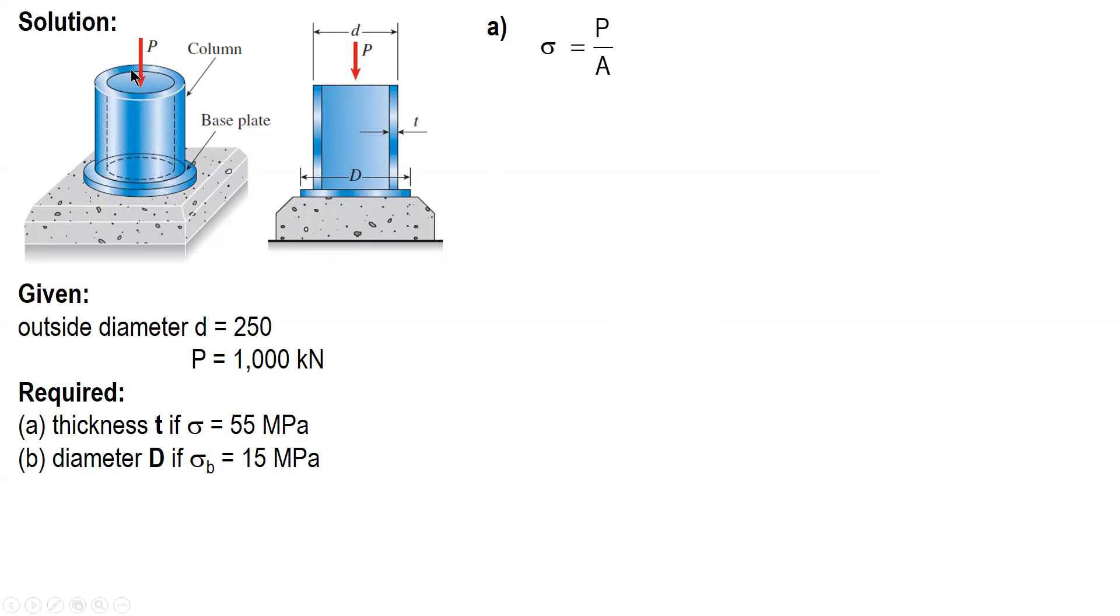Now the resisting area is this one. And you learn from section, bigger circle minus smaller circle. And the area of that is area of the bigger circle minus area of the smaller circle.